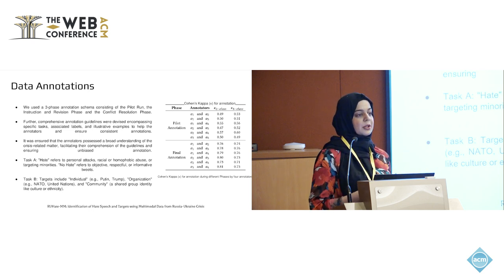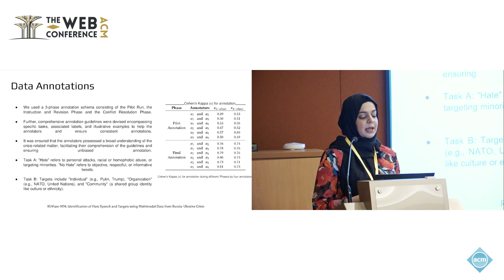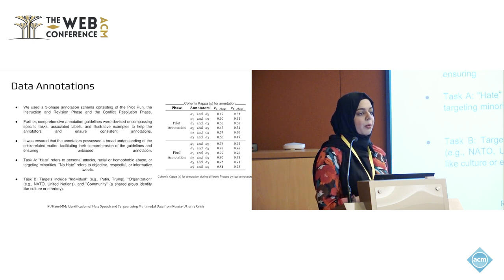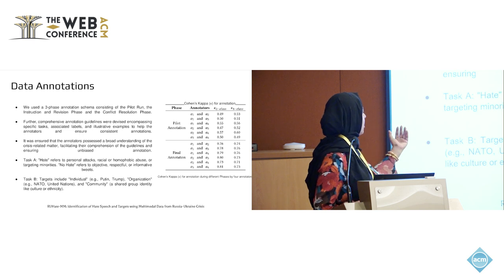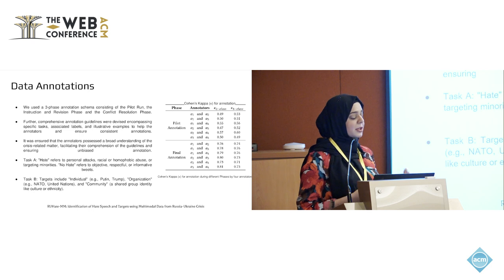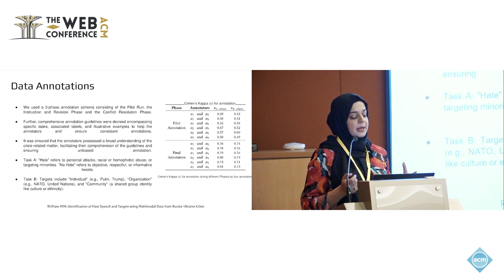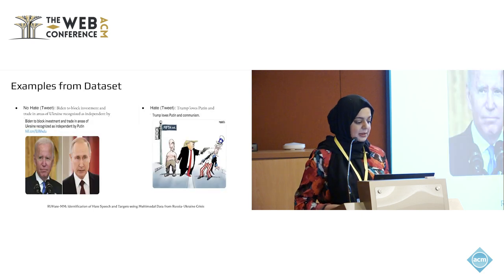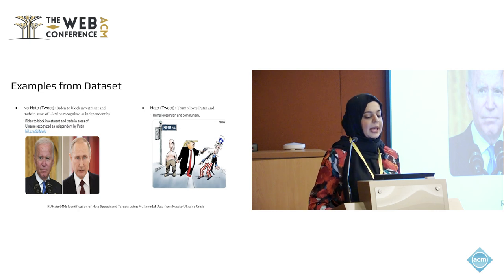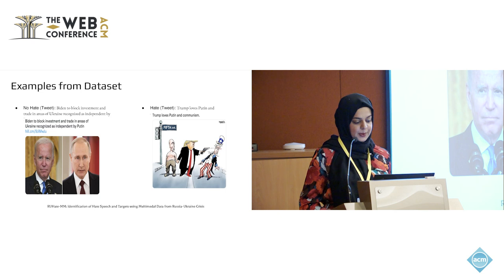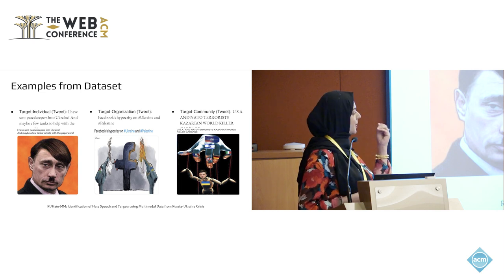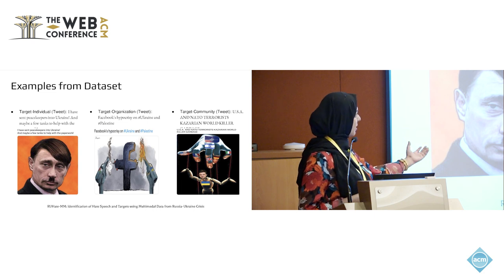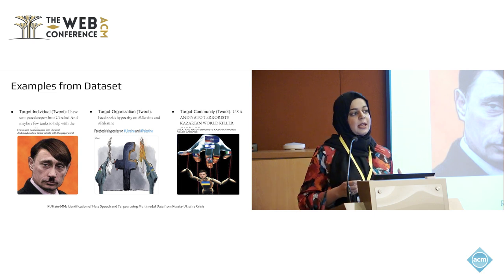The first task was to label whether a tweet is a hate tweet or not. Hate refers to personal attacks, racial or homophobic abuse, or targeting minorities, and no hate refers to objective, respectful, or informative tweets. The second task was to find the targets, which includes individuals — for example, Putin, Trump — organizations — for example, NATO, United Nations — and community, which is a shared group identity like culture or ethnicity. Examples are shown: the first does not show any hate, while the second is an example of a hate tweet. Further examples for targeted hate speech show an individual as a target, an organization as a target, and a community as a target of hate speech.